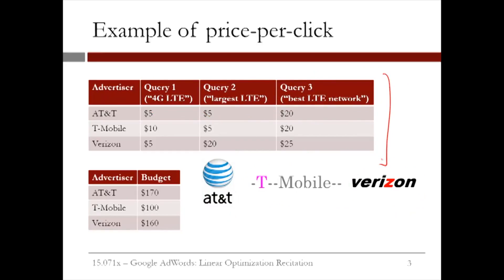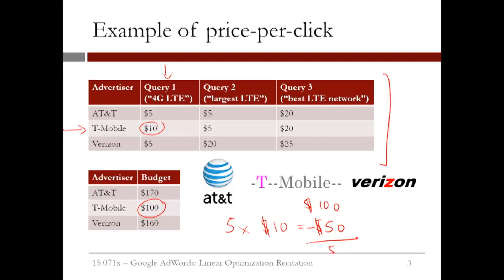The table here shows the price per click of each advertiser in each query. For example, this 10 here means that T-Mobile will pay Google $10 every time a user searches for Query 1 and clicks on T-Mobile's advertisement. In this example, T-Mobile's budget is $100. If T-Mobile begins advertising and by some point five people have clicked on T-Mobile's ad when they search for 4G LTE, then T-Mobile will need to pay 5 times $10, or a total of $50. This means that T-Mobile is left with $100 minus $50 for a remaining budget of $50.